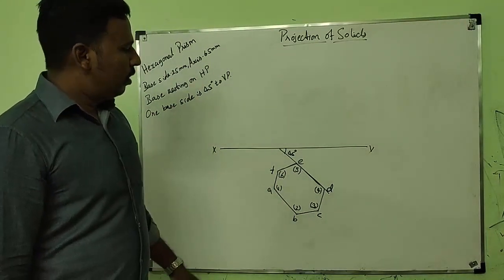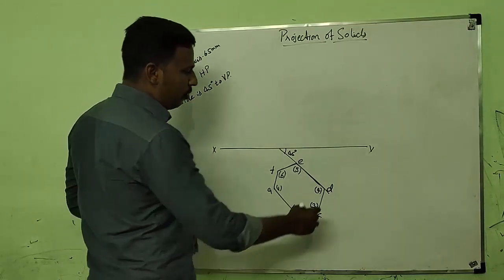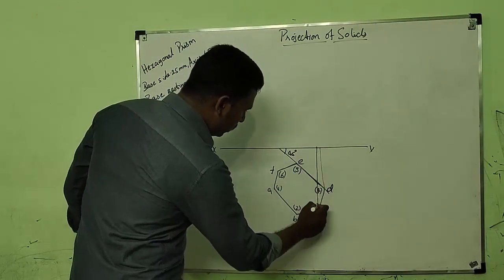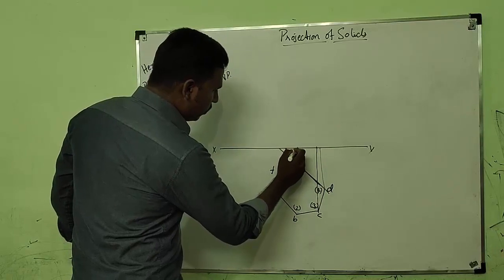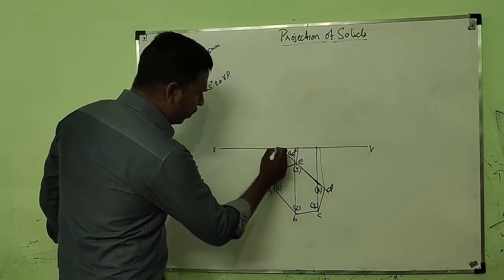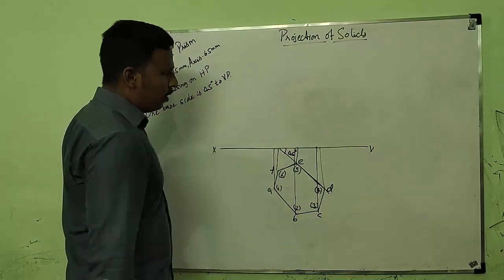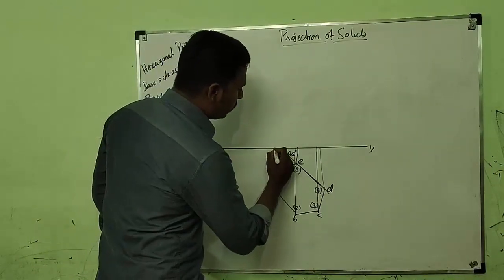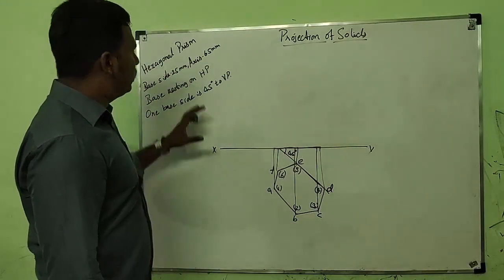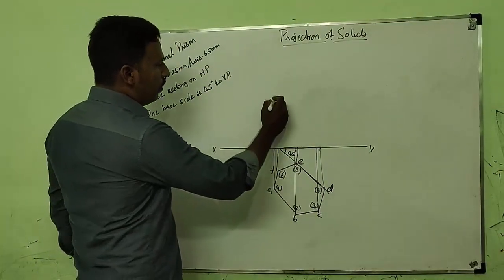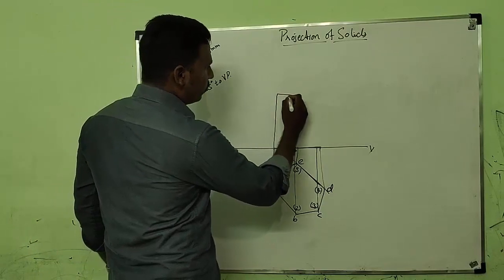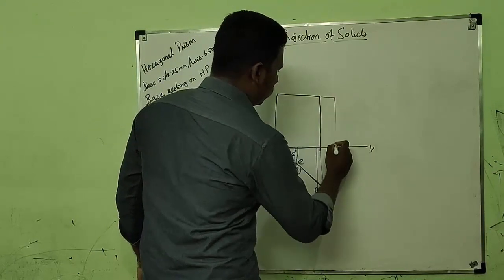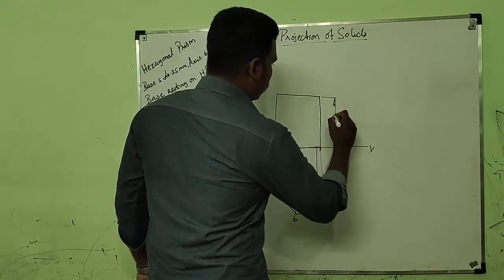Now we have to project all the points in order to draw the front view. We project points D, C, E, B, F, and A. As the object is resting on HP, the base should be drawn on the XY line itself, and the height is given as 65 mm, so we draw a vertical line of height 65 above.